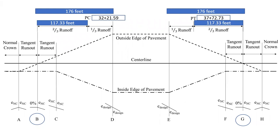At this point it's as simple as going and doing this calculation, doing the math here. The station for point B is going to be 32 plus 21.59 minus 117.33, and that's going to give us a station of 31 plus 04.26. Similarly for point G we're going to take our PT of 37 plus 72.73 and we're going to add the 117.33 feet and that will give us a station of our adverse crown removed at 38 plus 90.06.